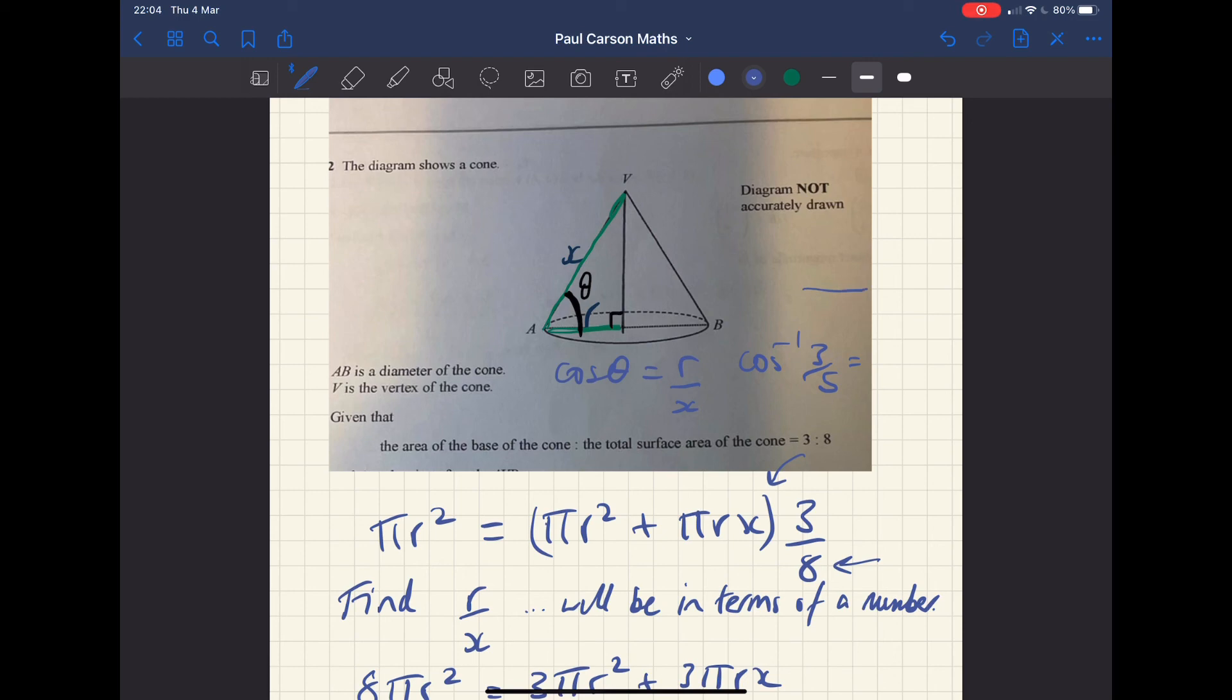But what that will be is, if I quickly draw it, you can actually see what it would be. So this would be effectively three and this would be five. If that's the case, this would actually be four because it's a three, four, five triangle. So the angle will turn out to be 53.1 degrees. It's actually quite a famous angle. So that should be the answer.